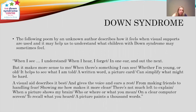So here's something that was written by an unknown author, and it describes how it feels when visual supports are used. It may help us to understand what children with Down syndrome may sometimes feel. When I see, I understand. When I hear, I forget — in one ear and out the next. But it makes more sense to me when there's something I can see. Whether I'm young or old, it helps to see what I am told. A written word, a picture card can simplify what might be hard. A visual aid describes it best and gives the voice and ears a rest. From making friends to handling fear, showing me how makes it more clear. There's not much left to explain when a picture shows my brain who or where or what you mean, on a clear computer screen. To recall what you heard, a picture paints a thousand words.